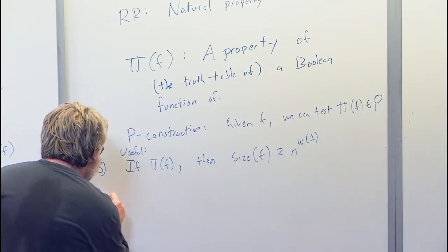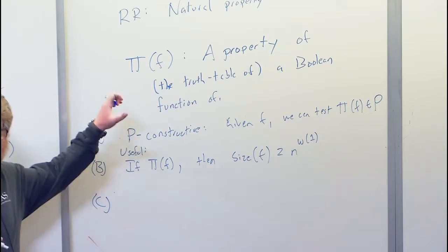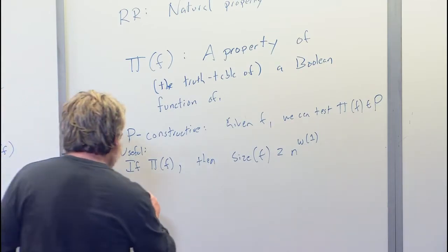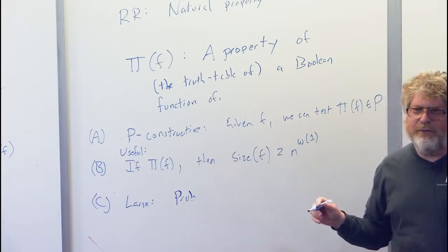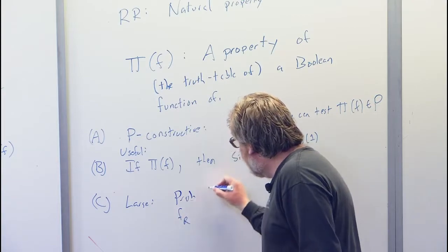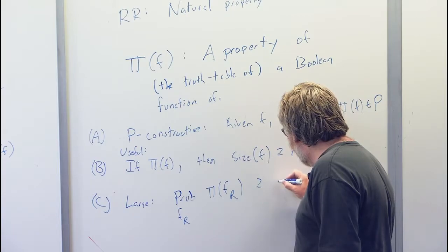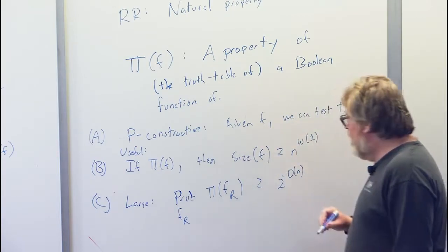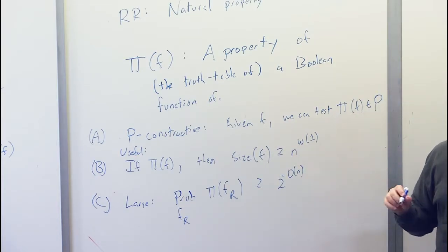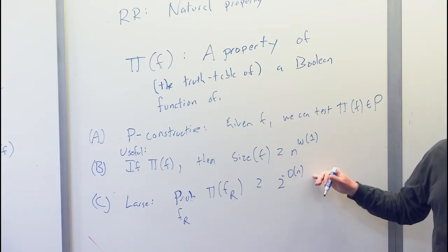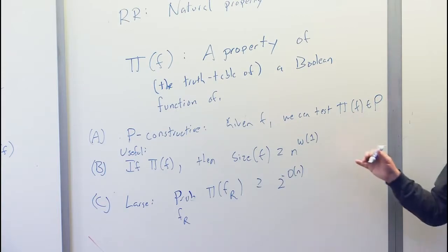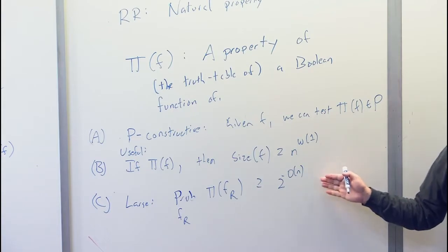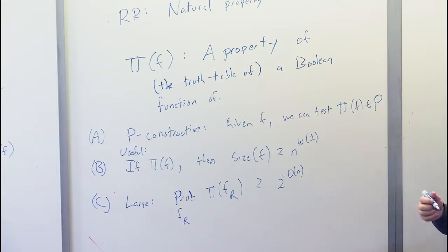The last condition is largeness. It says that it isn't true that almost nothing has this property. The probability over a random F that pi of a random function F holds is at most exponentially small in the input size. This was chosen because all their theorems hold even with this weak condition. Intuitively, a property coming out of a circuit lower bound would hold for almost all random functions, not just a non-negligible fraction, but all the theorems they proved were also true with just this weak largeness condition.